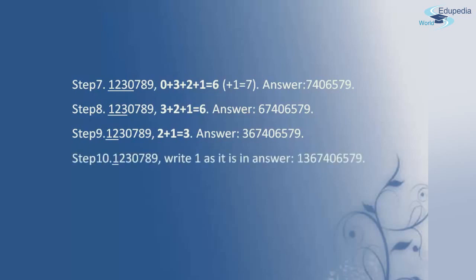Finally, the last remaining digit in the multiplicand is 1, and this 1 is written as it is in the answer. Therefore, we can say that 12,30,789 × 1111 equals 1,36,74,06,579.